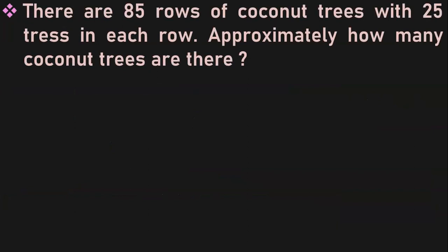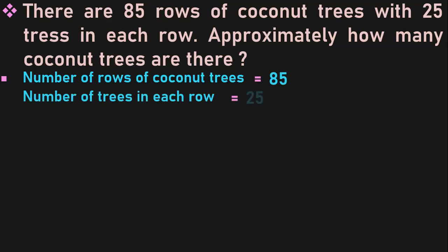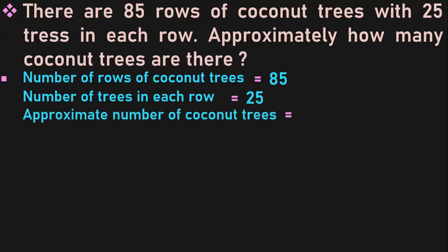Let us go on to the next type of sum. There are 85 rows of coconut trees with 25 trees in each row. Approximately how many coconut trees are there? Underline the word 'approximately.' Number of rows is 85; number of trees in each row is 25. The number of trees in 85 rows will be 85 into 25. But because of the word 'approximately,' we are not going to multiply directly — we are going to find the estimated product.